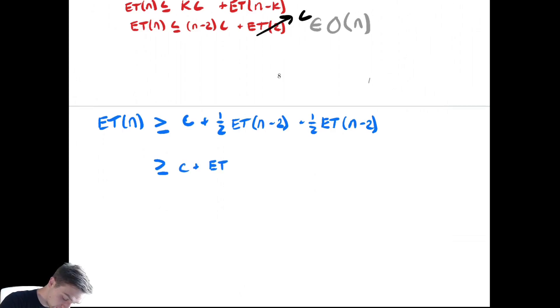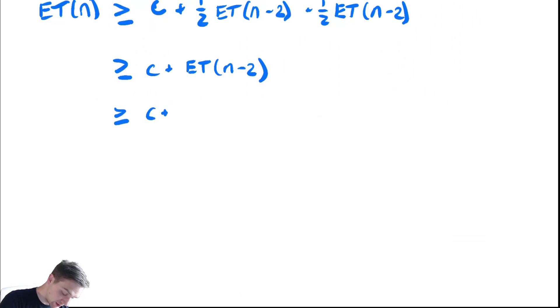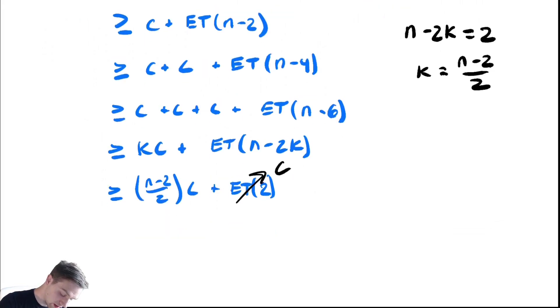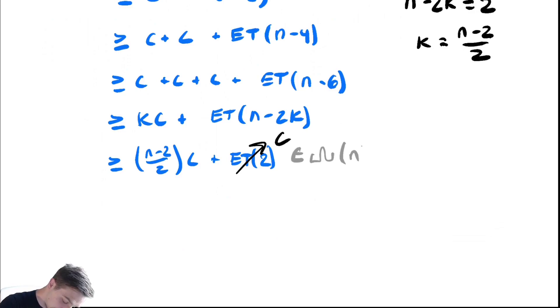We have c plus ET(n-2). This is greater than or equal to c plus c plus ET(n-4), which is greater than or equal to c plus c plus c plus ET(n-6), which is greater than or equal to Kc plus ET(n-2K). We want to solve n minus 2K equals 2, which is K equals (n-2)/2. This is greater than or equal to (n-2)/2 times c plus ET(2), which again is just constant. So this is big Omega of n. Therefore, ET(n) is in theta of n.